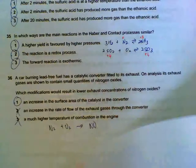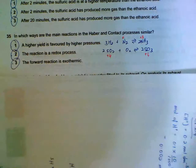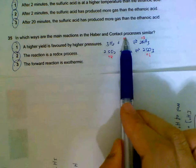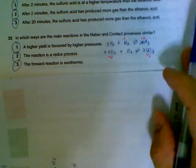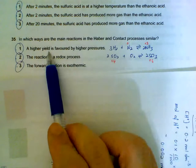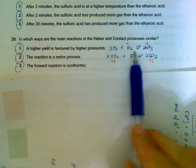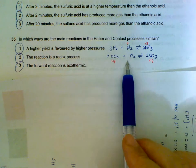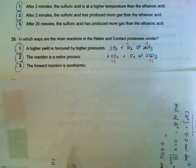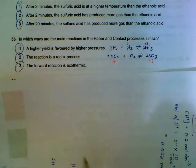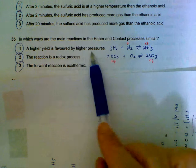35. How are the Haber process and contact processes similar? Higher yield is favored by higher pressure. You can see that if we write out the reversible reactions, a high pressure will shift the equilibrium to the right side for both cases, the side where there are less moles of gases. So statement 1 is correct.